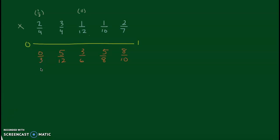So 0 thirds is 0. 5 twelfths is close to half, but it's not quite half. It's a little less than half. 3 sixths is the same as half. 5 eighths is a little bit bigger than half. So far all these are okay. And 8 tenths is pretty close to 1. So this bottom section of cards is in order from 0 to 1. And again, I used estimating to help me determine the order.